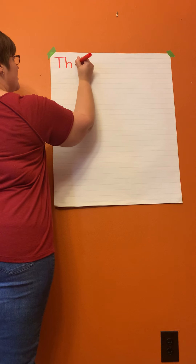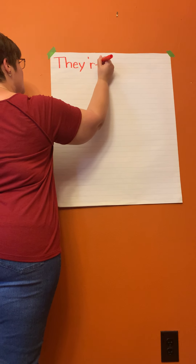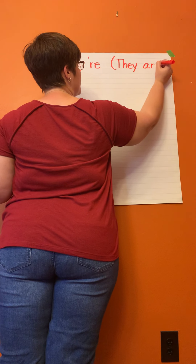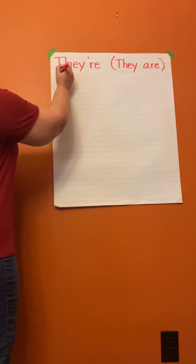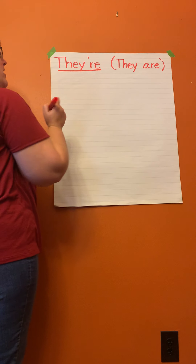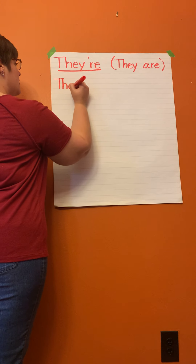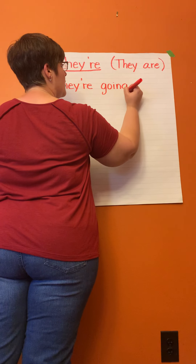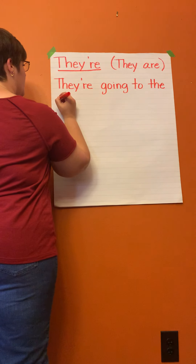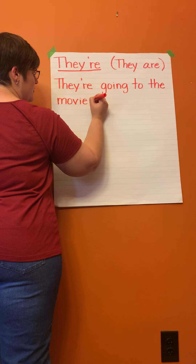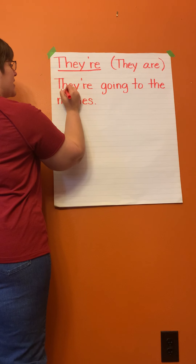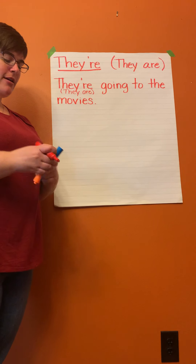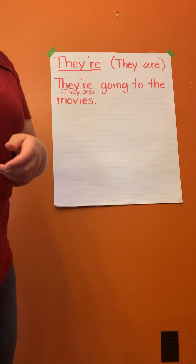First, we're going to look at this 'there,' which is actually the contraction for 'they are.' So, to use this there, here's a sentence: 'They're going to the movies.' You know this is correct if you can say the sentence using 'they are' and it still sounds right — 'they are going to the movies.' That's one of the easier ones to use.